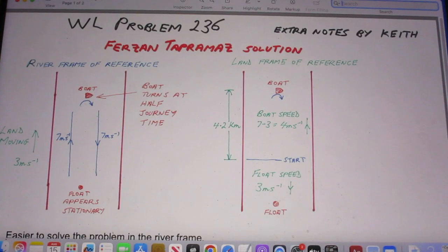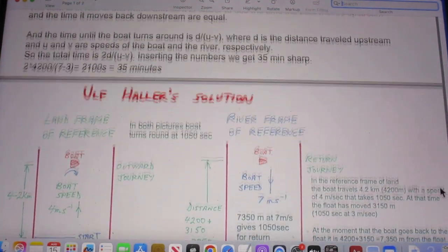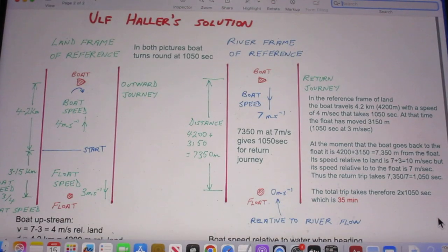So here are Keith Norman's solutions, but he cleverly copied solutions from two of the viewers. Here he copied the ones from Furzen with a difficult last name, and here he copied the solutions from Ulf Heller.